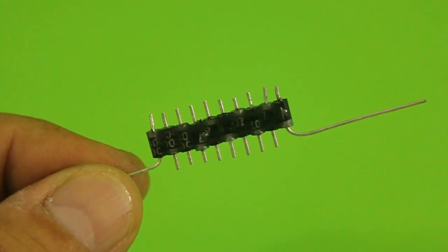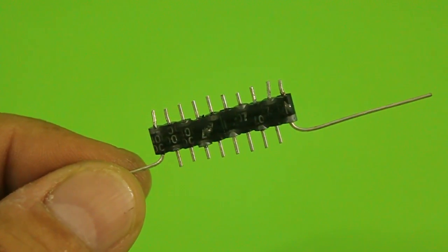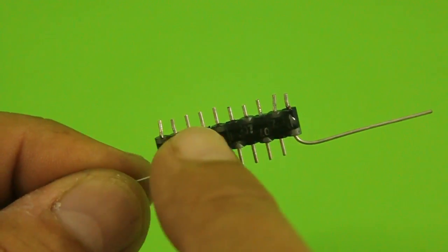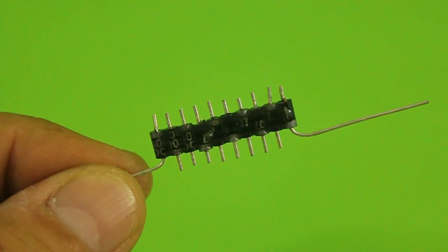We should get something like this and now using pliers we will bend the terminals to proceed to solder them together.